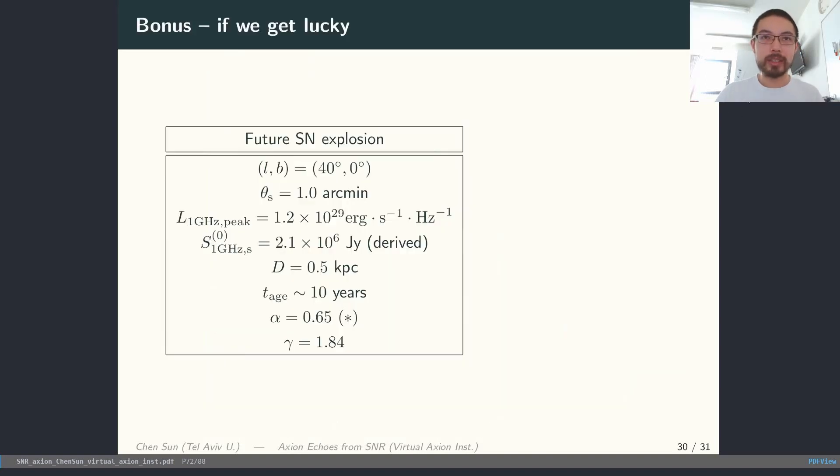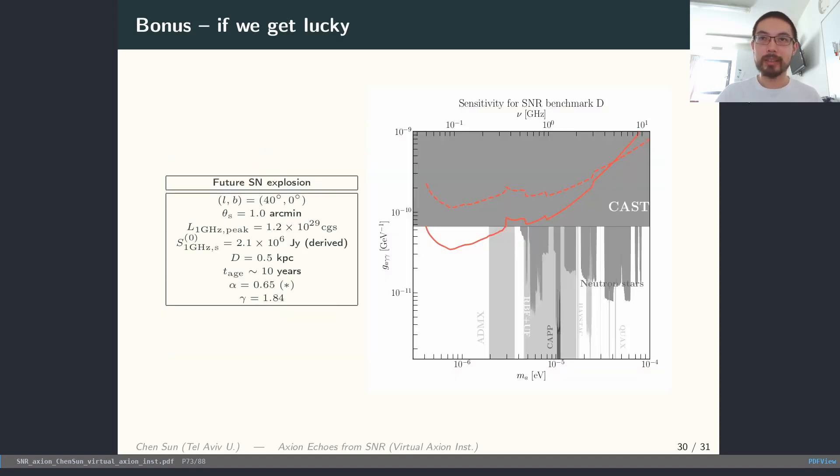As a bonus example, if we have a new supernova explosion near us with these parameters, then within 10 years, we can get these constraints from SKA.